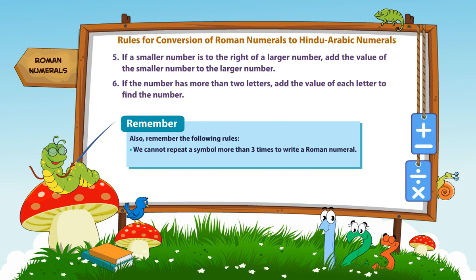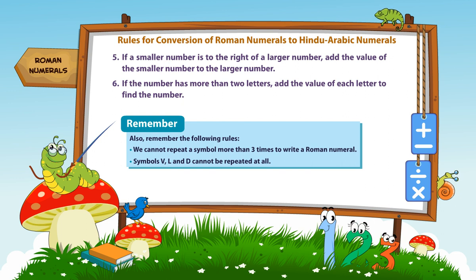We cannot repeat a symbol more than three times to write a Roman numeral. Symbols V, L and D cannot be repeated at all.